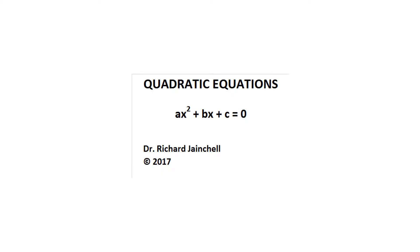Quadratic equations have the form a times x squared plus b times x plus c equal to zero. In this video, a, b, and c are real numbers, and the goal is to show how to solve these equations by three methods. The first method will be factoring, the second will be using the quadratic formula, and the third will be completing the square.